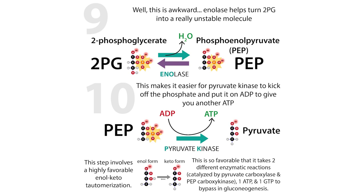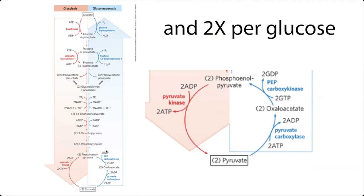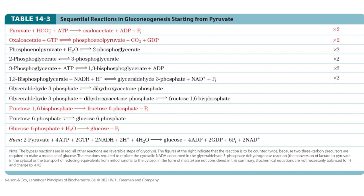If we think about going the other direction — gluconeogenesis — what steps need to be different? This last step is so thermodynamically favorable in the glycolysis direction that to reverse it we need to take two bypasses. We need the pyruvate carboxylase step, which gives us oxaloacetate, and then PEPCK (phosphoenolpyruvate carboxykinase) to go back to phosphoenolpyruvate. So we're spending the equivalent of two ATP to do this — we have to put in more energy than we would get from glycolysis in order to do gluconeogenesis.